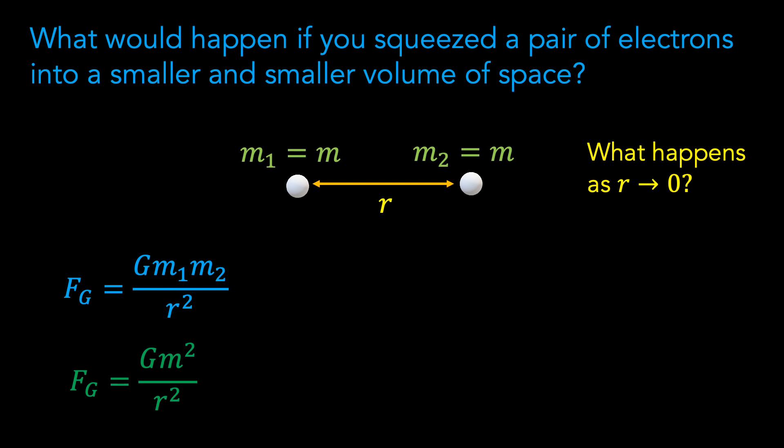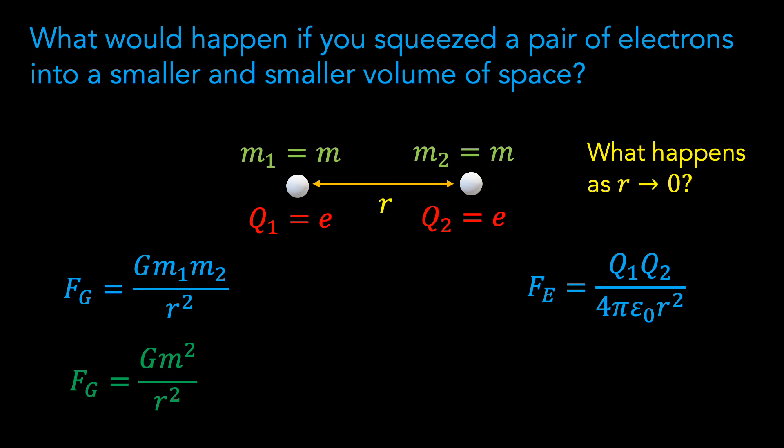What about the electrostatic force? To calculate this we make use of Coulomb's law, which states that the force between two charged particles is proportional to the product of the charges and inversely proportional to the square of the distance separating them. In this case, the constant of proportionality involves ε₀, which is known as the permittivity of free space. In the example of two electrons, both q1 and q2 are simply equal to e, the charge of the electron, and so we can write F equals e squared over 4π ε₀ r squared.